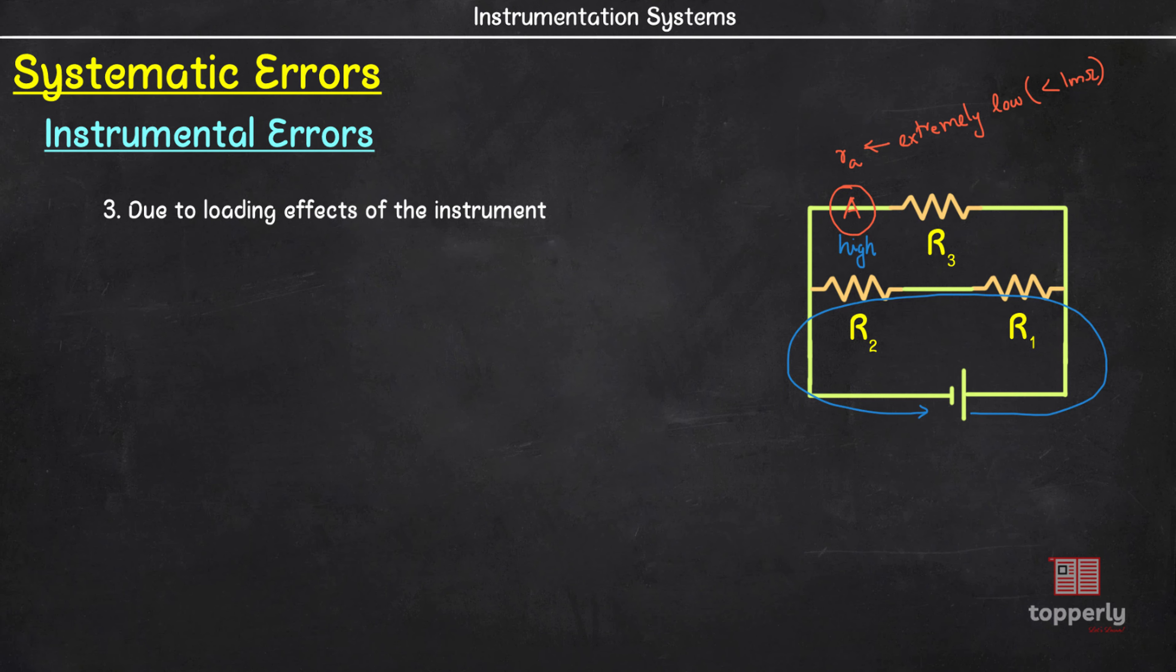Now let's see an example showing the loading effects. A voltmeter having a sensitivity of 1000 Ohm per volt reads 100V on its 150V scale when connected across an unknown resistance in series with a milli-ammeter. So the circuit mentioned in question has an unknown resistance in series with a milli-ammeter like this. Now we are connecting a voltmeter across the unknown resistance. Let's say the unknown resistance is Rx and this end of the circuit may be connected to a voltage source. We are not bothered about that.